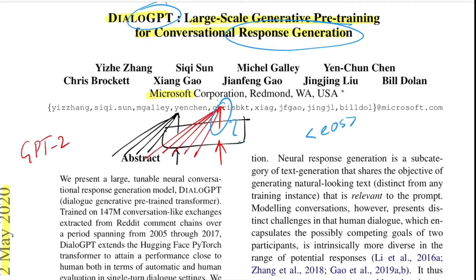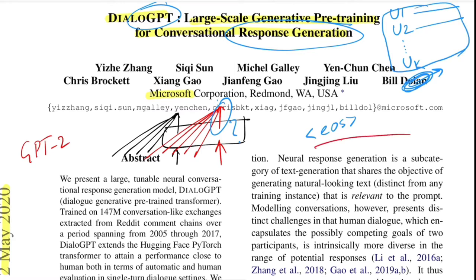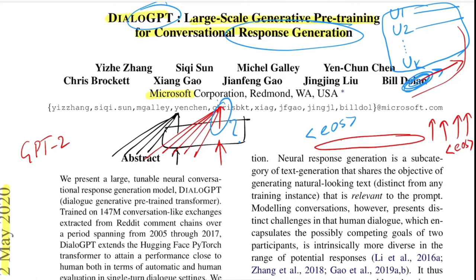Now talking about how GPT can be used in chatbot scenarios: say you have user 1 and user 2, they type things back and forth for k iterations, and now your chatbot needs to intervene. The input to the GPT model is essentially all the utterances concatenated as one big sequence, and the model then generates words until it sees the end-of-sequence token. They did this pre-training on a large amount of data scraped from Reddit subreddits.